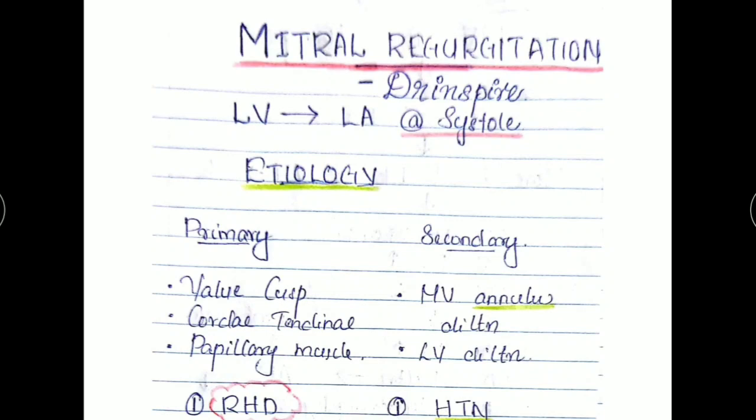So what exactly is mitral regurgitation? It is a pathology during systole. During systole, the blood from the left ventricle is being ejected into the left atria resulting in some complications. This topic will be dealt under few headings, in which two are very important.